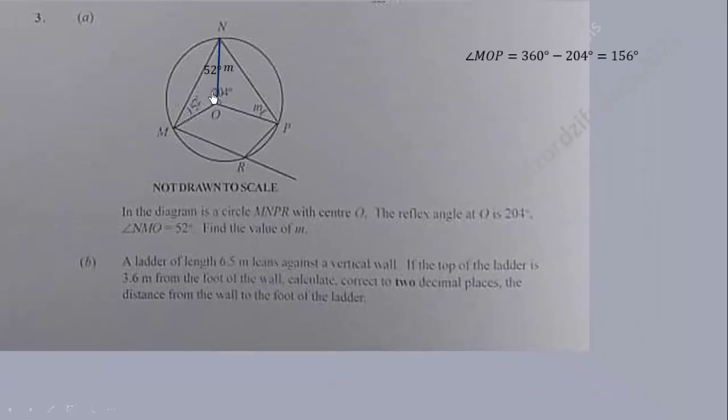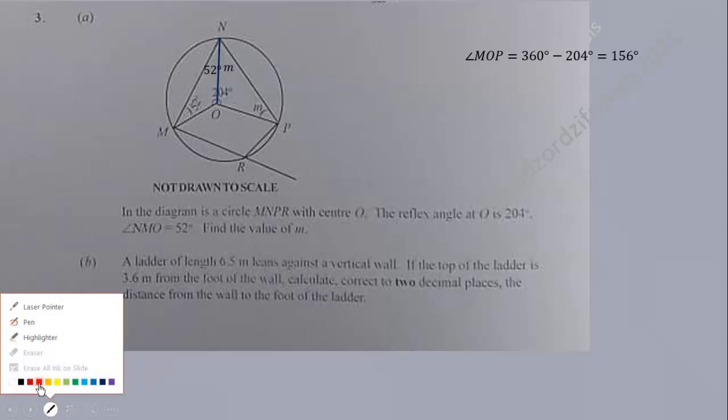Then we need to use the reflex angle over here to find angle MOP. This angle here will be equal to 156 degrees because this angle and this angle are angles at the center or angles about a point. So the two of them should give you 360 degrees. So when we subtract the reflex angle, we get 156 degrees.